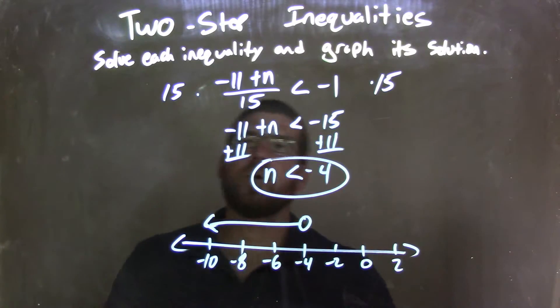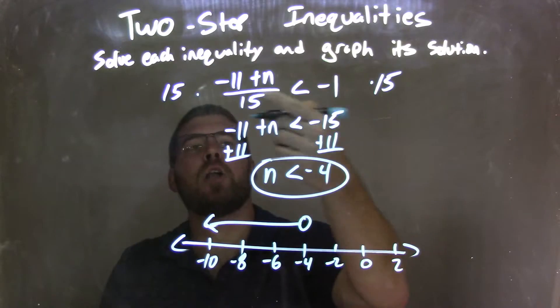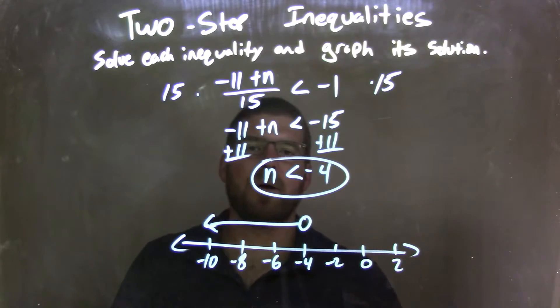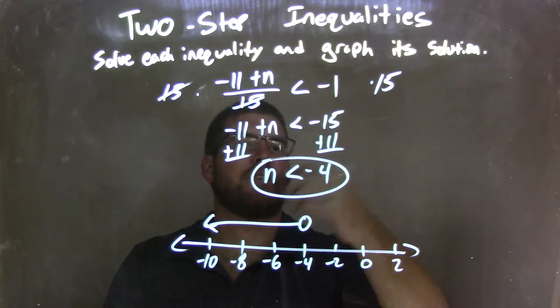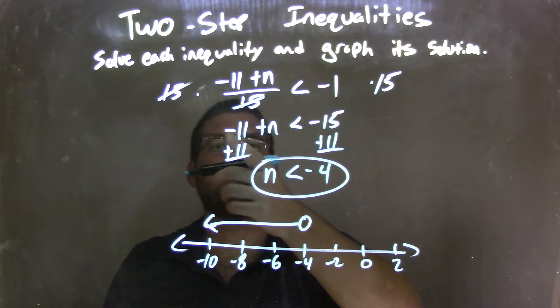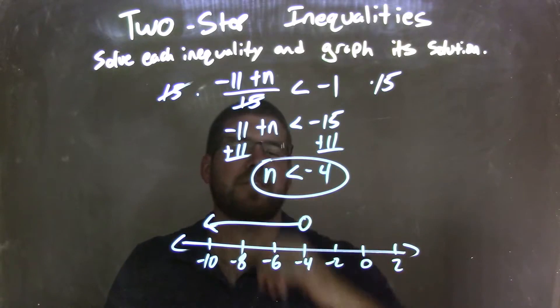So let's recap. We're given negative 11 plus n, all over 15, is less than negative 1. I multiply both sides by 15, which eliminates the 15 on the left and gives me negative 15 on the right. On the left-hand side, I'm left with negative 11 plus n, and we have a less than symbol.